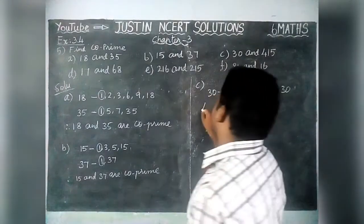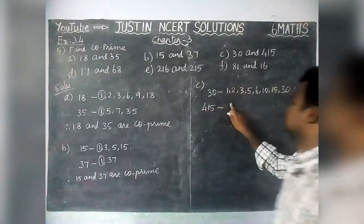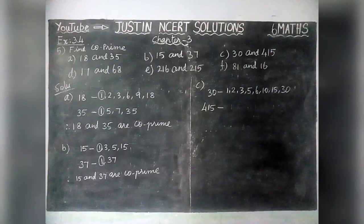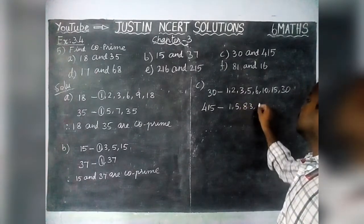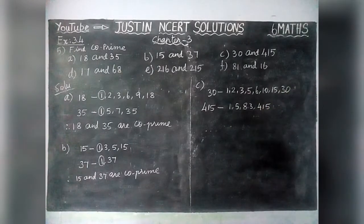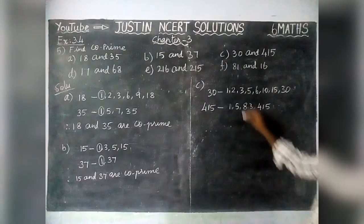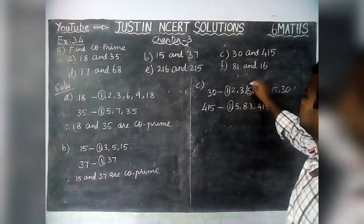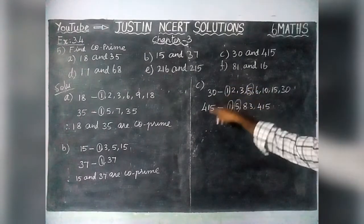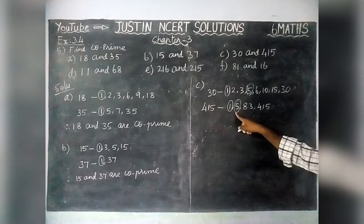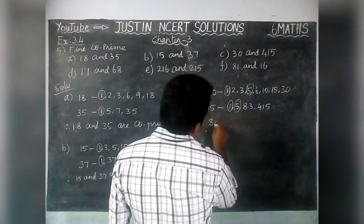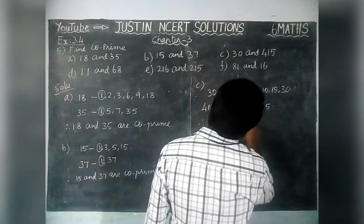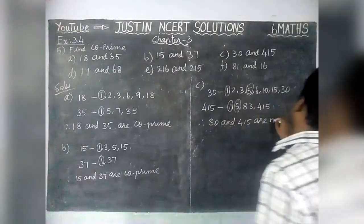We will divide 415 without any remainder. Factors of 415 are 1, 5, 83, and 415. Now we have to check the common factors: 1 and 5. Since 30 and 415 have two common factors, therefore it is not co-prime. 30 and 415 are not co-prime.